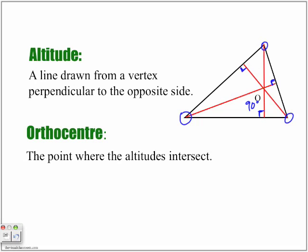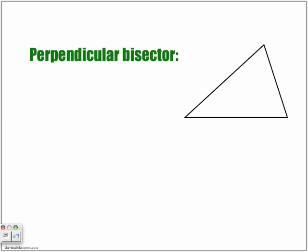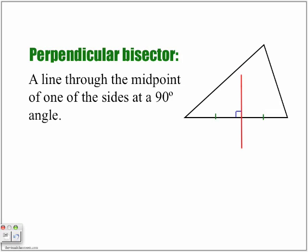The perpendicular bisector is a line through the midpoint of one of the sides at a 90-degree angle. There is no vertex involved — it is all based on 90-degree angles. The hash marks show that this side is the same length as the other side. Perpendicular means two lines crossing at 90 degrees, and bisector means it separates the side into two equal halves.